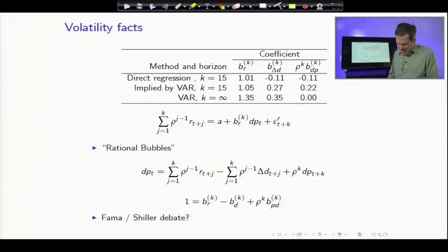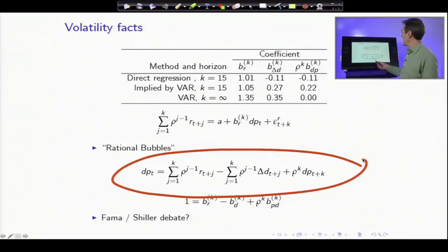Now there's one little thing left out here. Here's our K period identity where I only iterated K periods forwards. This raises the possibility of the rational bubble. If you hear this debate, the bubble thing comes up all along. What about the internet bubble? What about the bubble in houses?